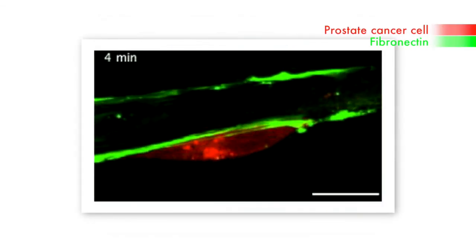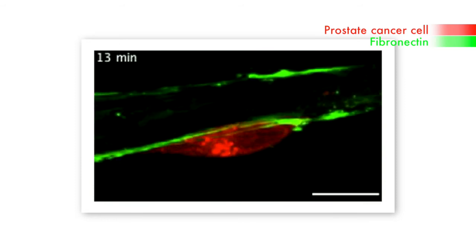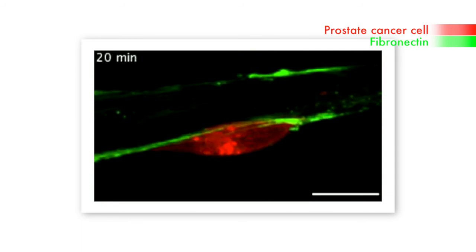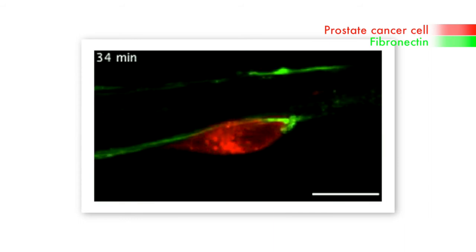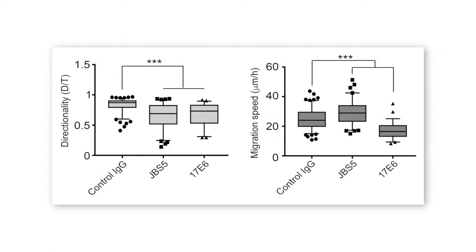But how do cancer cells move along the aligned fibronectin fibres produced by cancer-associated fibroblasts? The researchers examined the roles of alpha-5 and alpha-V integrins, both expressed by prostate cancer cells and linked to invasion and migration. When blocking these integrins, cancer cells migrated with less directionality in both cases — but they migrated faster when alpha-5 integrins were blocked, and much slower when alpha-V integrins were blocked — indicating that cancer cells use alpha-V integrins when migrating on the cancer-associated fibroblast matrix.